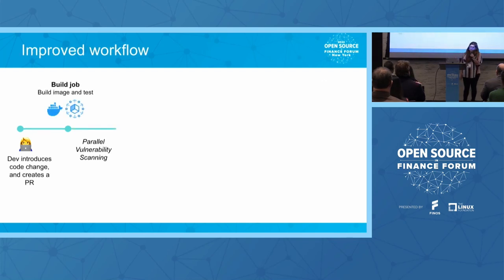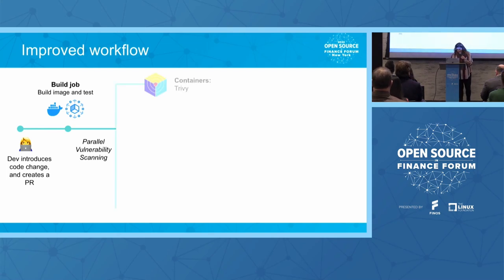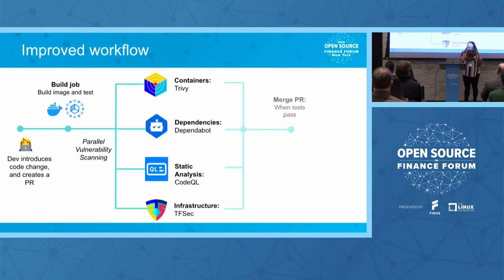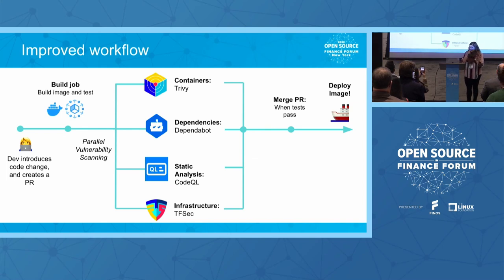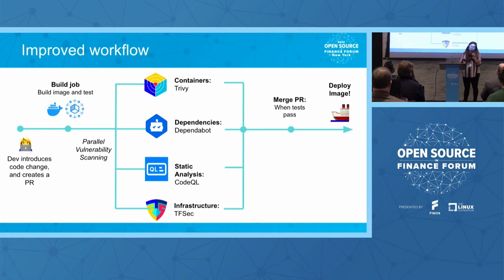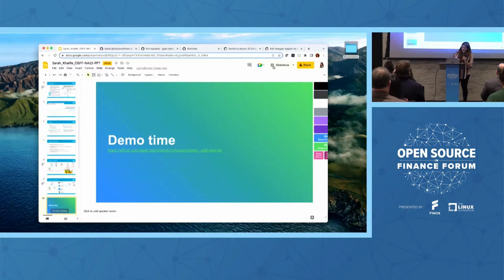So what can we do to improve that workflow? We want the dev to introduce new code changes, build, test, but also run parallel vulnerability scanning at the same time. Based on the security checks we talked about, we want to scan for container vulnerabilities, dependency vulnerabilities, static code analysis vulnerabilities, and infrastructure as code vulnerabilities. There are different tool links listed here — all from CNCF, open source, or things GitHub offers free for open source developers. That's when we merge the PR once those tests pass and deploy an image to Kubernetes or whatever environment you choose.